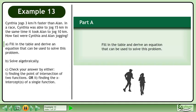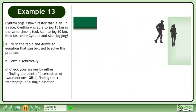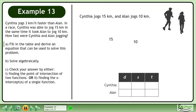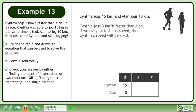In Part A, fill in the table and derive an equation that can be used to solve this problem. Cynthia jogs 15 km and Alan jogs 10 km — put these values in the distance column. Cynthia jogs 3 km per hour faster than Alan. If we assign x to Alan's speed, then Cynthia's speed will be x plus 3. Put these values in the speed column.